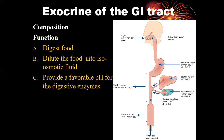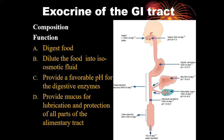Secretions also provide mucus for lubrication and protection of all parts of the alimentary tract. Mucin is secreted by mucus-producing cells and converted into mucus, which covers and protects the mucosal cells from damage by acidity or irritants in the chyme. This also facilitates movement of the bolus through the GIT lumen.